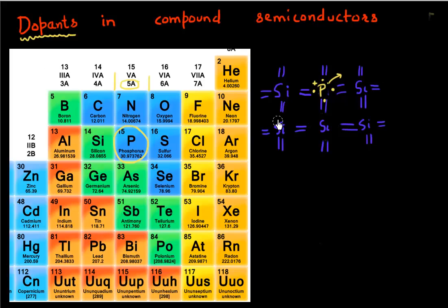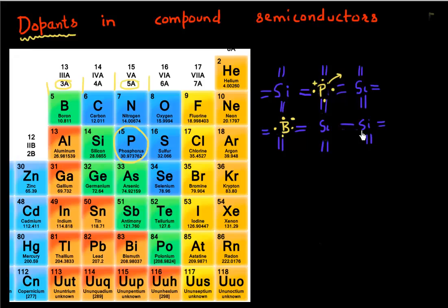Similarly, if we replace one of these silicon atoms with boron, which lies in column three or group three of the periodic table, then we have only three valence shell electrons. Each of these boron atoms absorbs the extra electron from the lattice and becomes negatively charged. In return, it creates one vacancy in the lattice, which we call a hole.